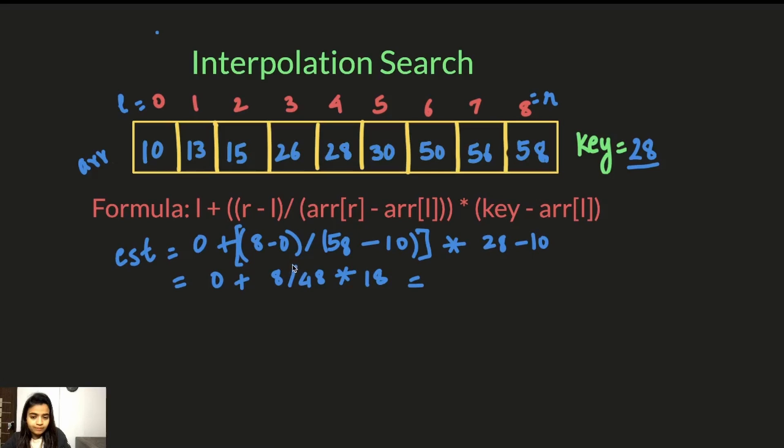So now we get 1 divided by 6 which is 8, 6 are 48. So 1 by 6 into 18. So 6, 3 is 18. So we get the value 3. Initially we get 3.